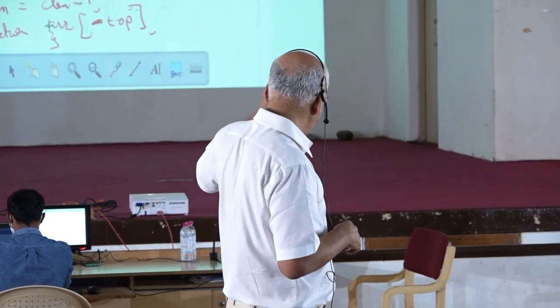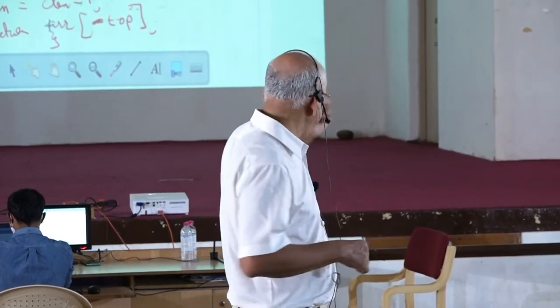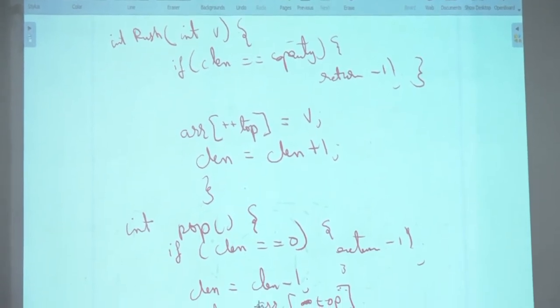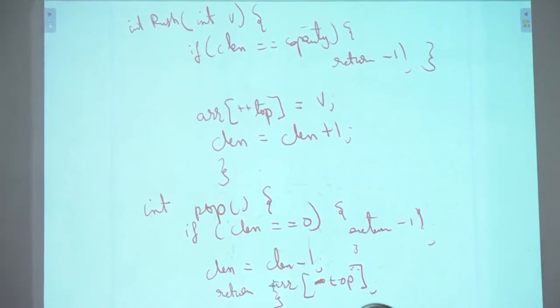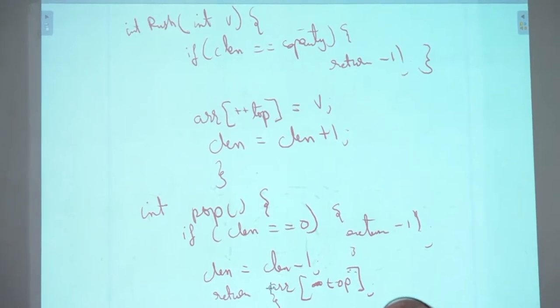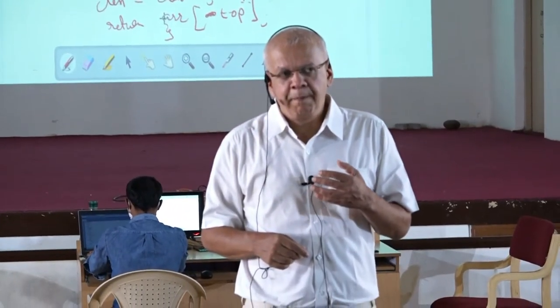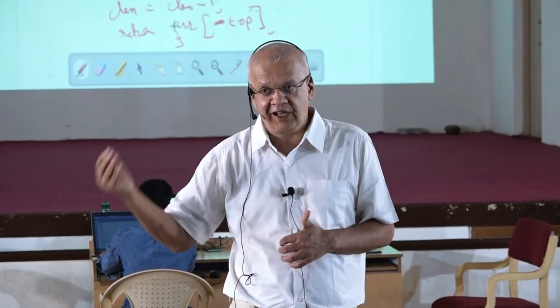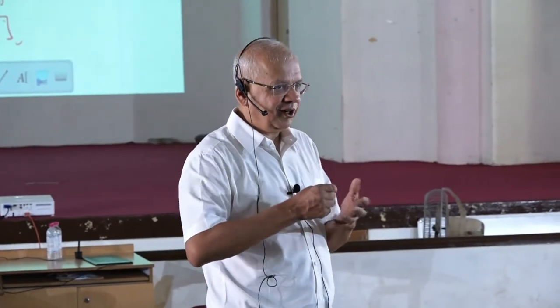If you don't want to complicate your life, do it in two lines. While putting an element in the stack — first increment and then put it in the slot, because top starts with minus one. And while taking it out, it's a pre-increment for push but a post-decrement for pop. Or just write it on separate lines.